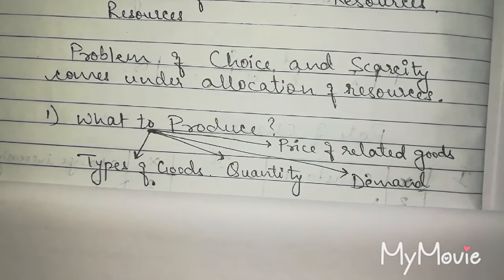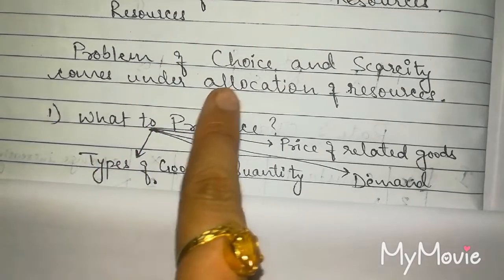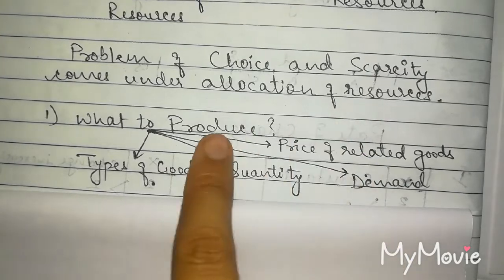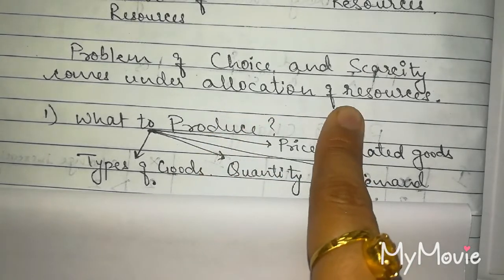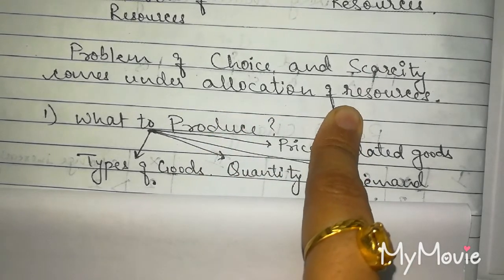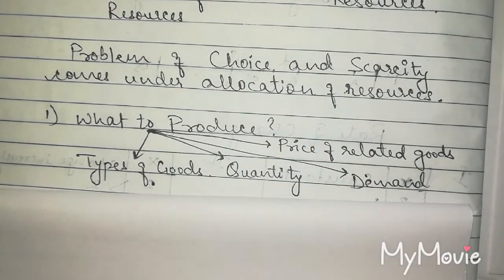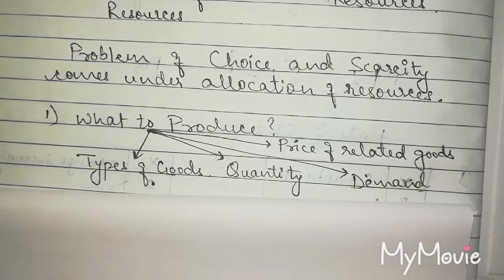So these are the factors which will affect this decision of what to produce. Here, I have written problem of choice and scarcity comes under allocation of resources. This allocation of resources, that is distribution of resources, includes all three problems: what to produce, how to produce, and for whom to produce.